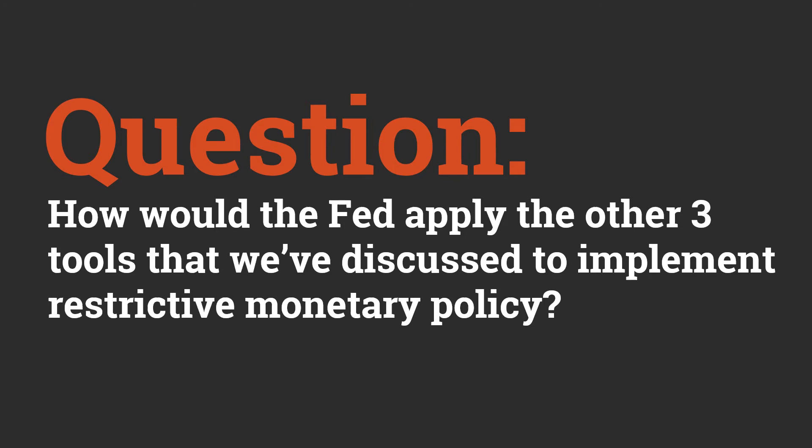How would the Federal Reserve apply the other three tools to implement restrictive monetary policy? In order to conduct restrictive monetary policy, the Federal Reserve can do three other things besides open market operations: it can increase the reserve requirements, increase the discount rate relative to the federal funds rate, and increase the interest paid on reserves.